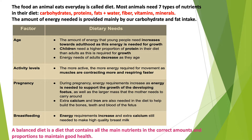Diet. The food an animal eats every day is called diet. Most animals need seven types of nutrients in their diet. These are carbohydrates, proteins, fats, water, fiber, vitamins and minerals.